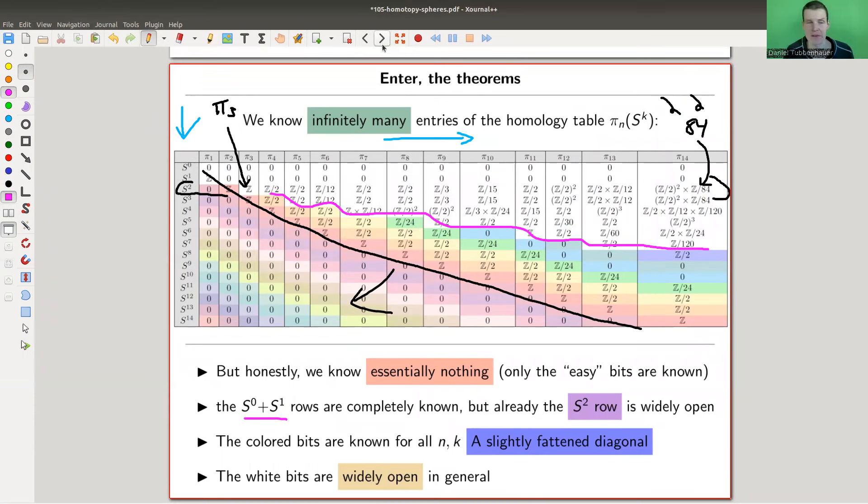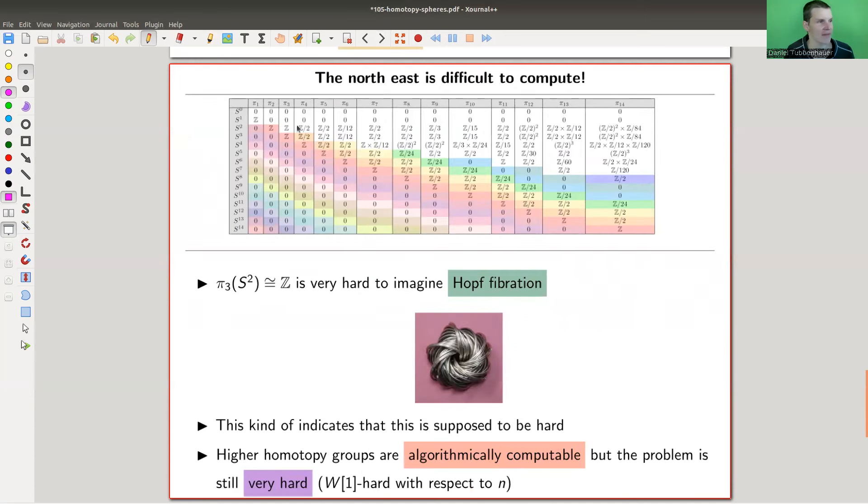The only pattern that is obvious is the diagonal here is always, has always a copy of Z, and everything below the diagonal is 0. The theorem is, we know infinitely many entries of that table, but that's a bit of a lie, because essentially only the colored bits are known. And the white part is unknown. The only row that's completely known are the boring ones. S⁰ and S¹, and already the S² row, so we're talking about the soccer ball here, is not just not known, but it's essentially impossible to compute.